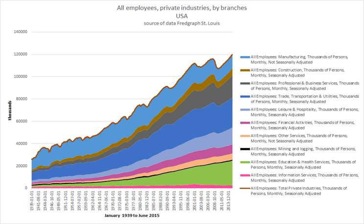For example, human resource management policies are seen as dictated by the market in the first view, as essential mechanisms for aligning the interests of employees and employers and thereby creating profitable companies in the second view, as insufficient for looking out for workers' interests in the third view, and as manipulative managerial tools for shaping the ideology and structure of the workplace in the fourth view.